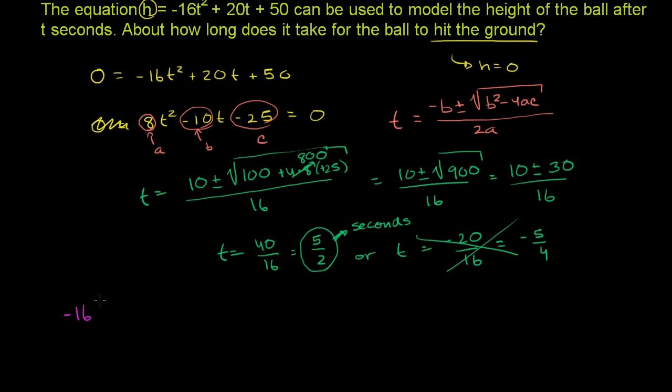We have negative 16 times 5 halves squared plus 20 times 5 halves plus 50. This needs to be equal to 0. So this is negative 16 times 25 over 4 plus, let's see, if we divide 20 by 2 we get 10. If we divide 2 by 2 we get 1. So 10 times 5 is going to be 50 plus 50. This needs to be equal to 0.